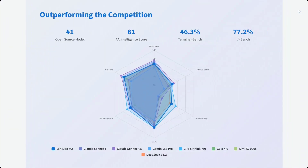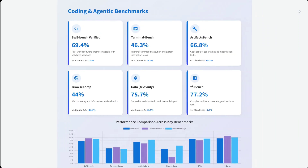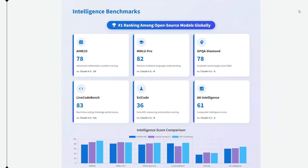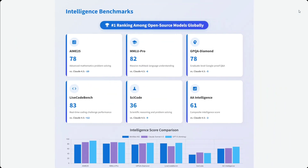Outperforming the competition — it is the top open source model on intelligence core, Terminal Bench, Tower Bench, coding, and agentic benchmarks as already discussed. The intelligence benchmarks are also pretty good.